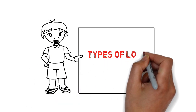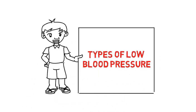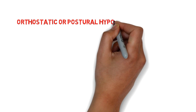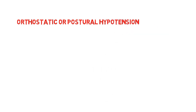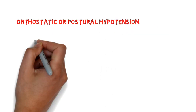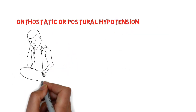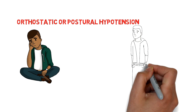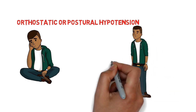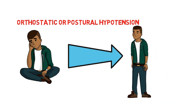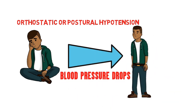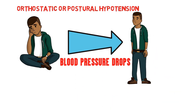Today's topic is types of low blood pressure. Orthostatic or postural hypotension is a sudden drop in blood pressure when you stand up from a sitting position or after lying down. Gravity causes blood to pool in your legs when you stand.